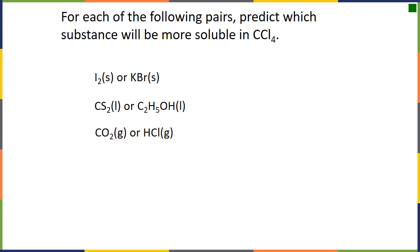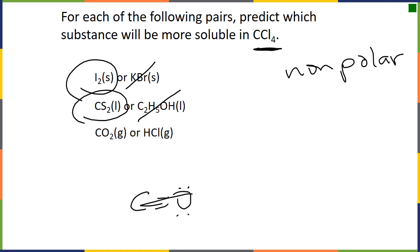All right. Which of these will be more soluble in carbon tetrachloride? It's going to be the one that is nonpolar. Anything that is polar or ionic will not dissolve in a nonpolar substance. So in this case, KBr is ionic, so it's iodine. Methanol, we know, has hydrogen bonding. Carbon disulfide is going to be nice and nonpolar. It's linear. Carbon dioxide and HCl.